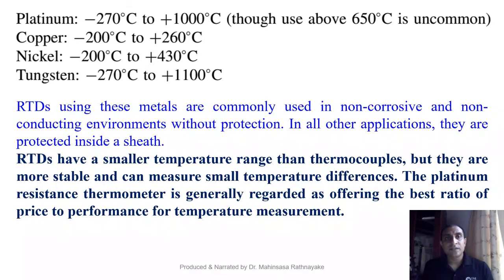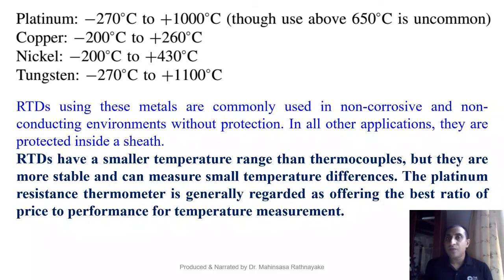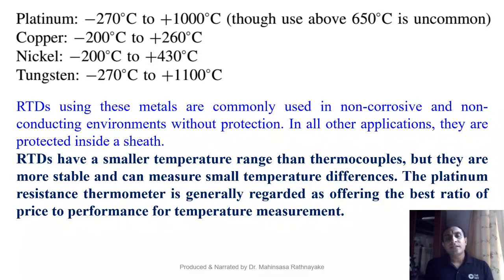From existing findings, RTDs manufactured using platinum have a measurement range of around minus 270°C to 1000°C. Copper has a limited range of minus 200 to 260°C, nickel is minus 200 to 430°C, and tungsten gives a larger range of minus 270 to 1100°C. RTDs using these metals are commonly used in non-corrosive and non-conducting environments without special protection, because there is no threat of corrosion or decay of the metal element.